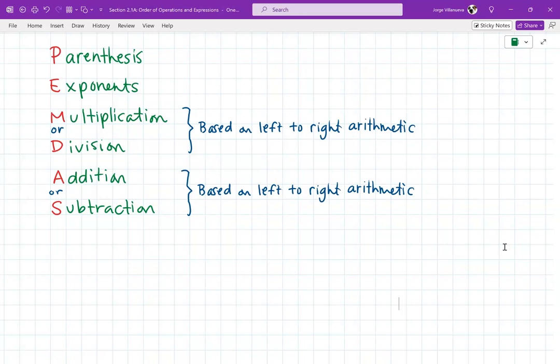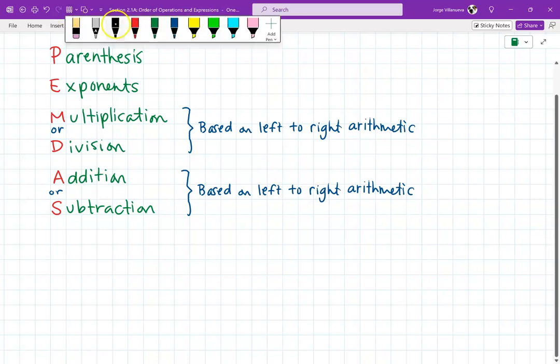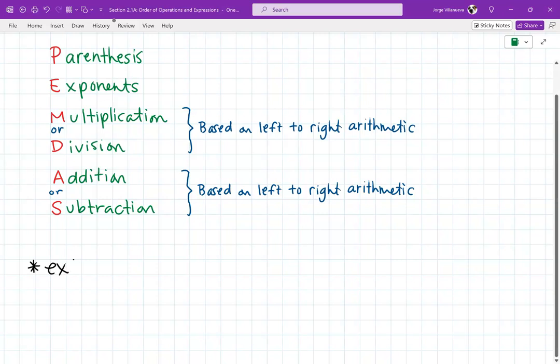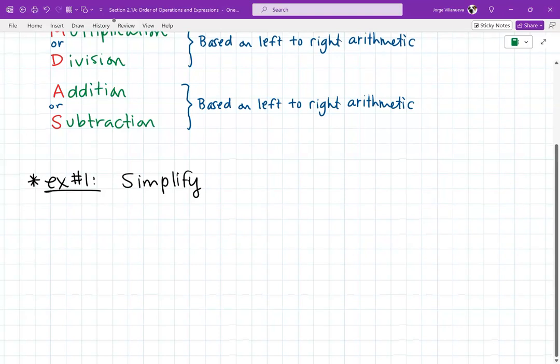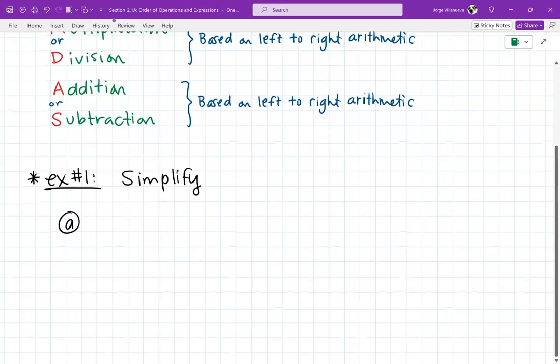But this is what we're going to basically be following, the order of operations. Parentheses, exponents, multiplication or division, and then addition or subtraction. So here are some examples that you guys are going to see in your homework. Not all of them come from your homework, but most of them do. So I tell you guys to write them down. Let me put right here, simplify.